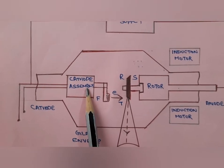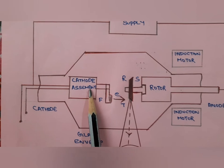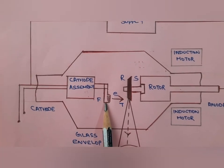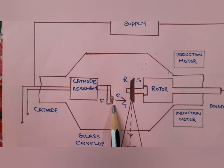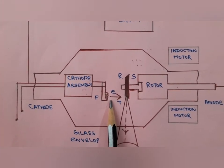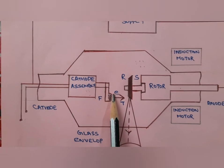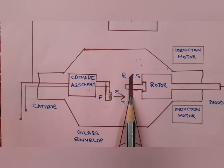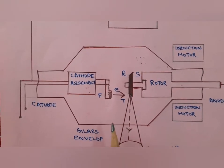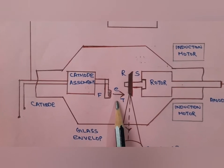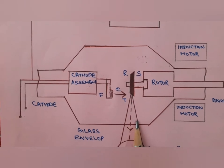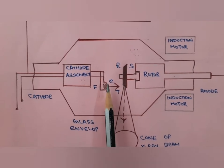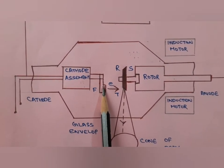The cathode assembly is similar to that in the stationary anode X-ray tube, using a tungsten filament. In the rotating anode X-ray tube, dual filaments can be used — one for a small focal spot and one for a large focal spot. A small filament gives a small area of electron bombardment and smaller X-ray exposure area, while a larger filament gives a larger area of electron bombardment and larger exposure area.